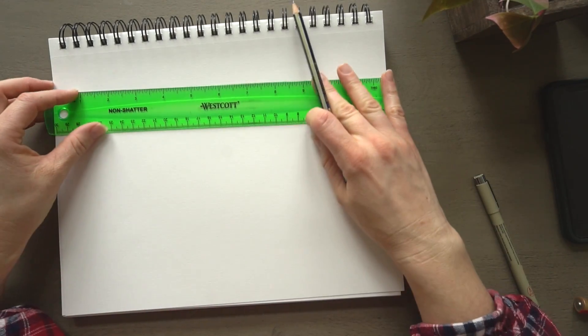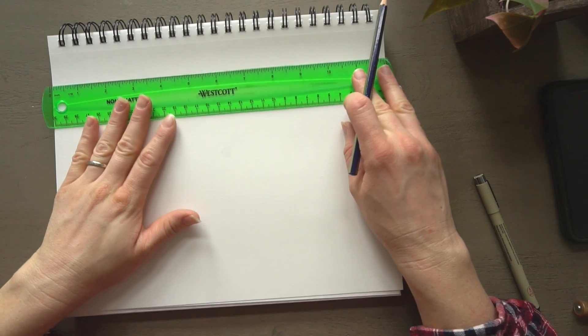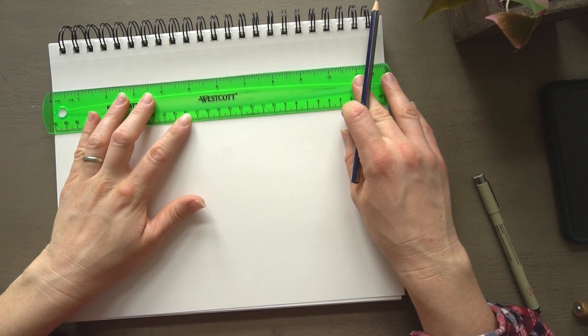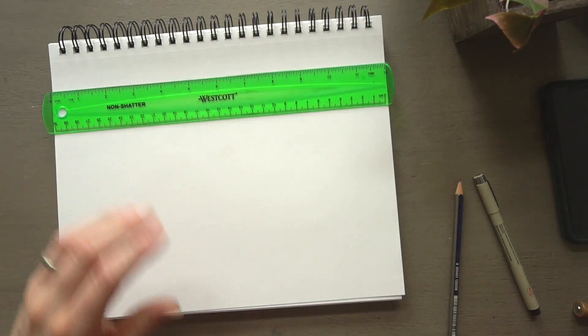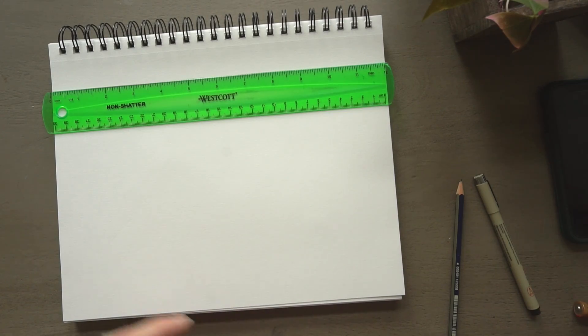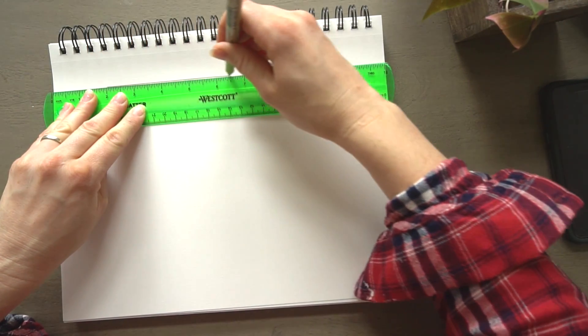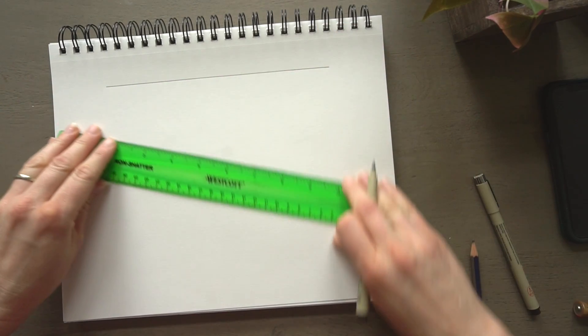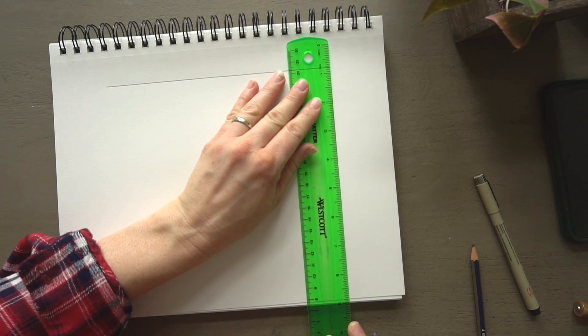You can use a ruler if you want, or you can just draw a box. I like to keep these inside of a box for some reason. It just makes sense in my head to have it that way. So I'm just going to draw a box on my paper that I'm going to fit this drawing inside of.